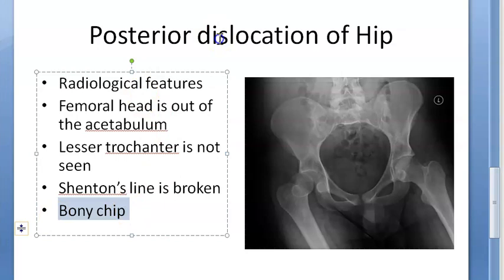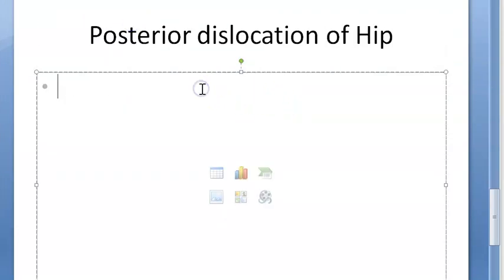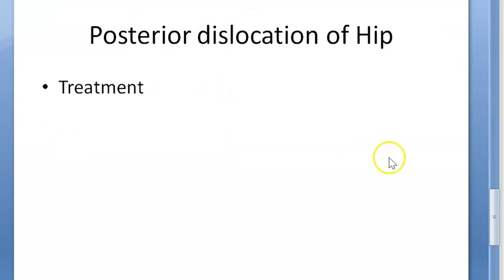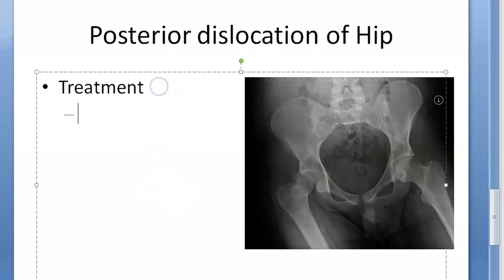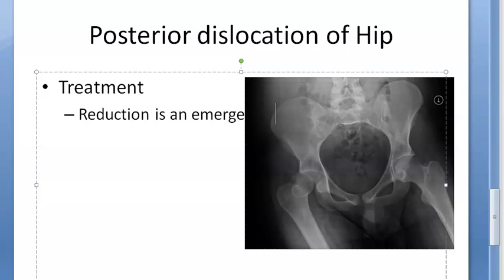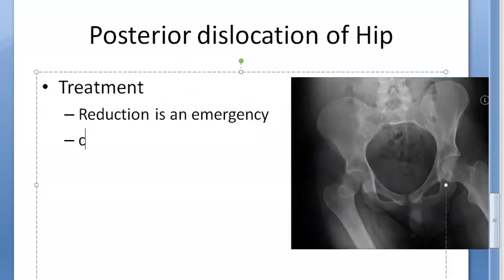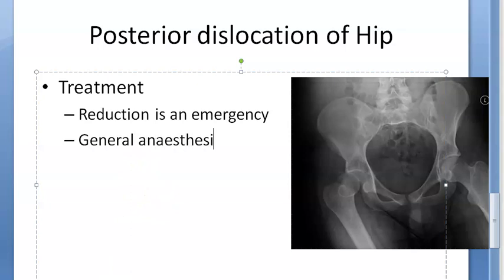Now let's move on to treatment of posterior dislocation of hip. You have to reduce this as an emergency — you will first try a closed reduction. Reduction is an emergency. You will give general anesthesia and then perform a closed reduction, which is essentially manipulation — you try to realign the femoral head back into the acetabulum.